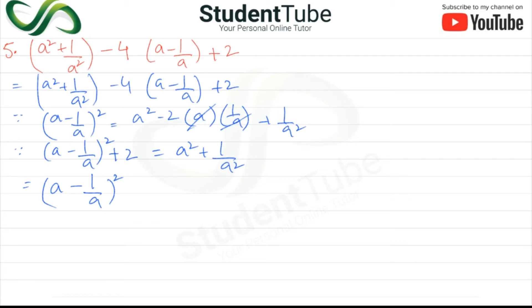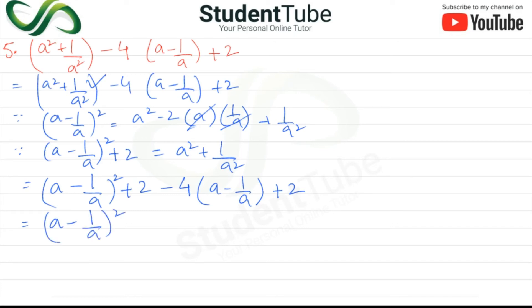So this will be a minus 1 upon a, whole squared. Now we apply: a minus 1 upon a squared equals a squared minus 2. Applying the formula gives a minus 1 upon a squared. And a minus 2 upon a squared equals a minus 1 upon a squared. Now the next term will come: minus 4, and a minus 1 upon a plus 2. Here a squared gives a minus 1 upon a, whole squared, which is plus 2, plus 2. So this will be plus 4.